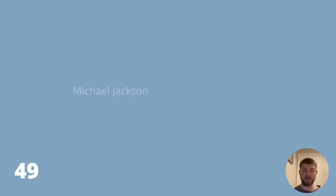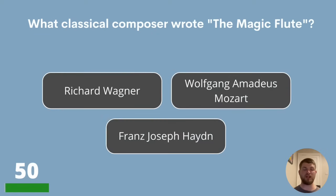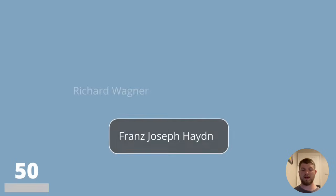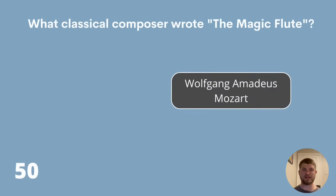Question 50 — the halfway mark! What classical composer wrote The Magic Flute? Was it Richard Wagner, Wolfgang Amadeus Mozart or Franz Josef Haydn? The answer is Wolfgang Amadeus Mozart.